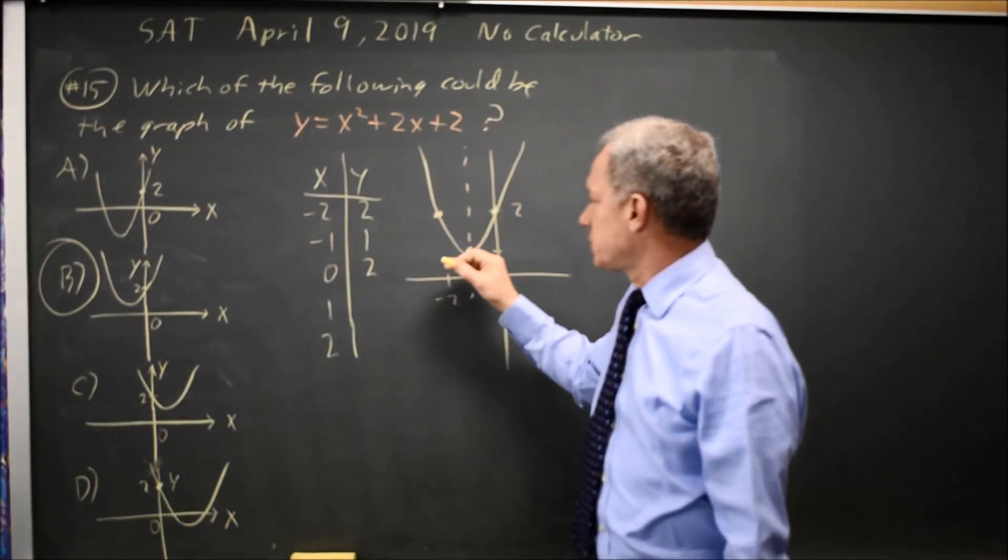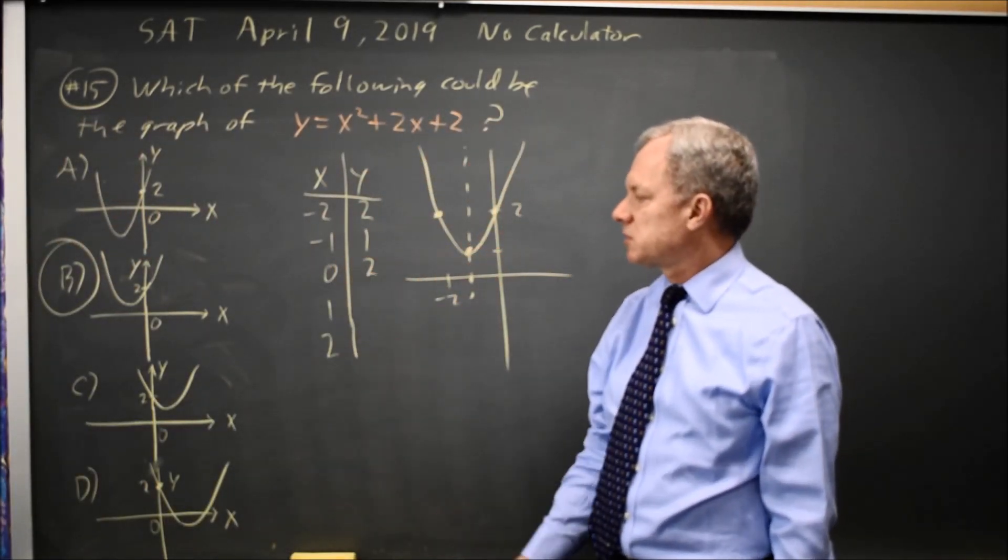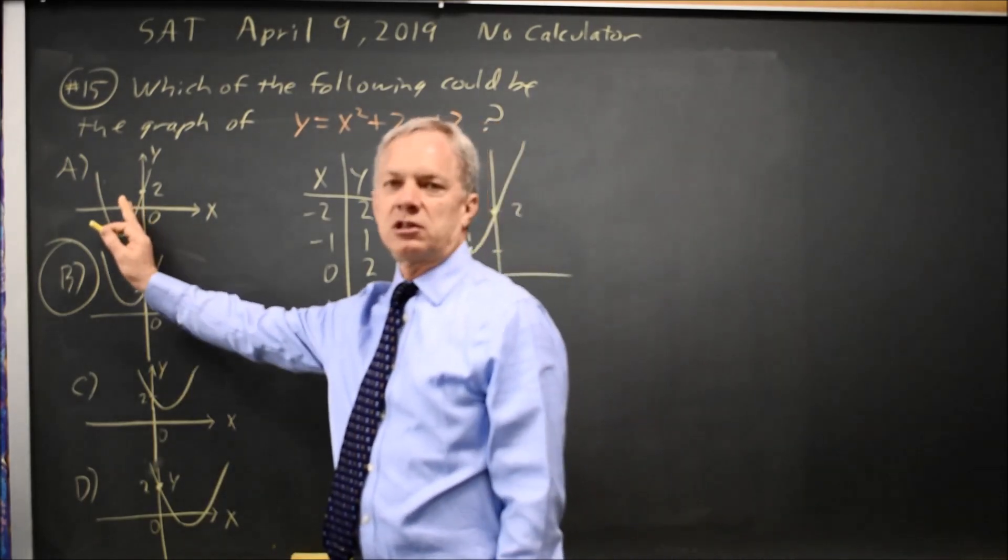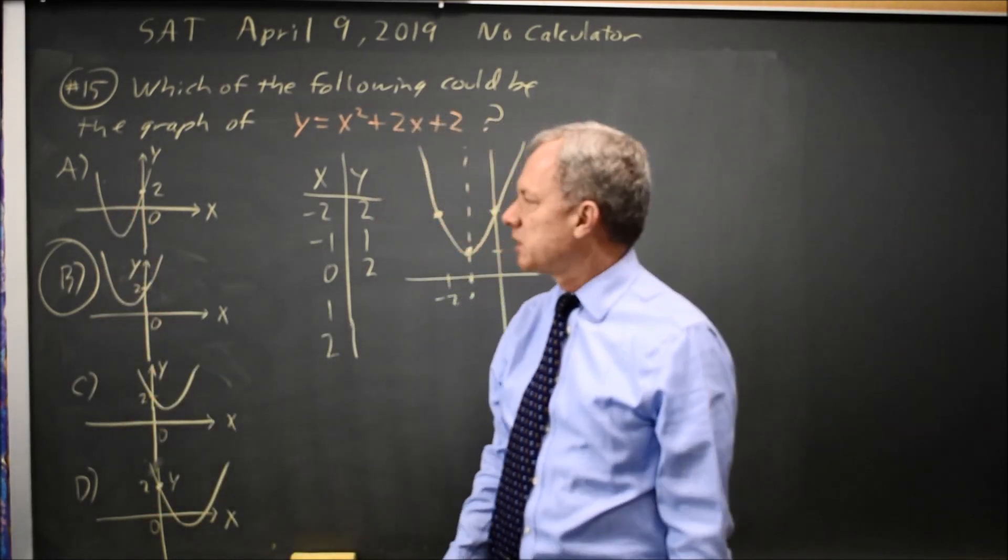Since the value of the vertex is positive, choice A is wrong. And since the vertex is to the left of the Y axis, choices C and D are wrong.